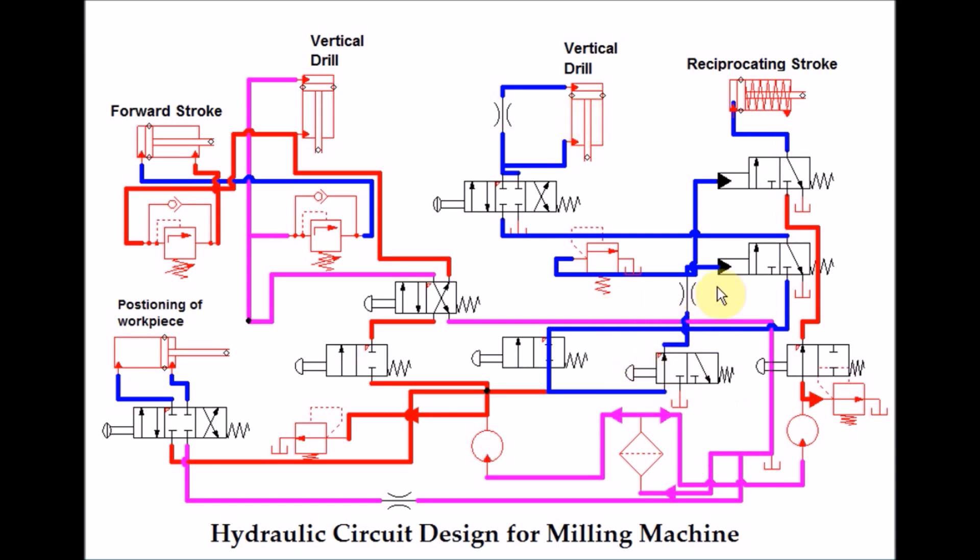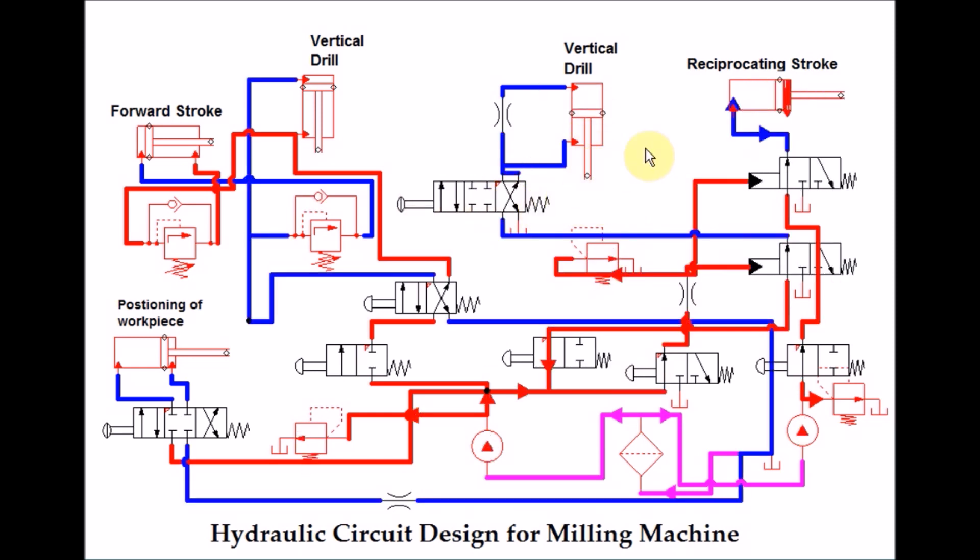We will turn on this and this. So you can see that as this moves down we can have our forward stroke. As soon as it gets to the last limit we can stop this stroke.